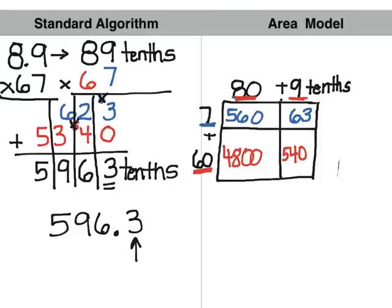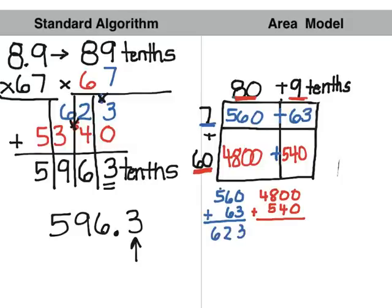Now that we have done all the multiplication we have to add up all of our digits inside these boxes. So when we add 560 plus 63, we get 623. Then we have to add our 4800 plus 540, which gives us 5340. And if you notice, these numbers are the same as the numbers that we got when we used our standard algorithm.